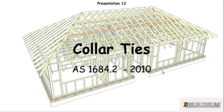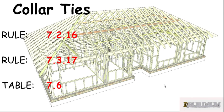G'day and welcome back to Buildsum. This is the 13th presentation in our series on the Timber Framing Code. In this one we're going to look at Collar Ties. The rules for Collar Ties are 7.2.16 and 7.3.17, and the table we're going to use is Table 7.6.